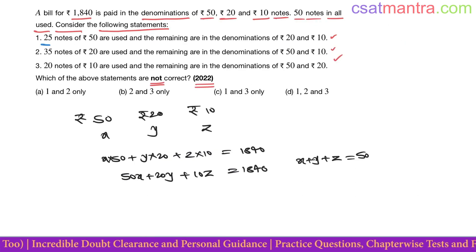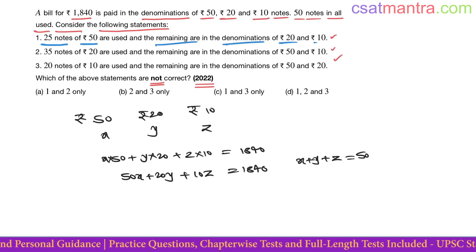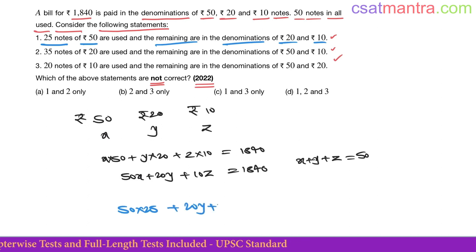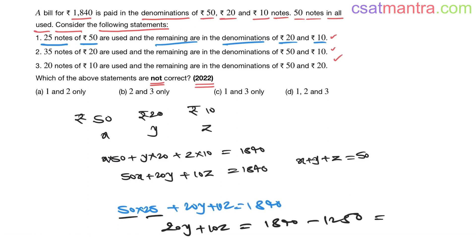Now statement 1: 25 notes of ₹50 are used and remaining are in the denominations of ₹20 and ₹10. So x is 25 here. 50 into 25 plus 20y plus 10z = 1840. So 20y + 10z = 1840 - 1250, which is 590. Canceling zero on both sides: 2y + z = 59.